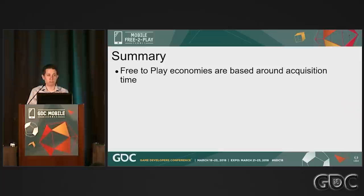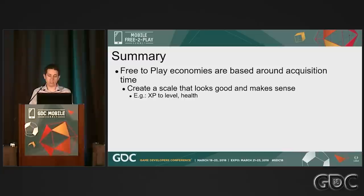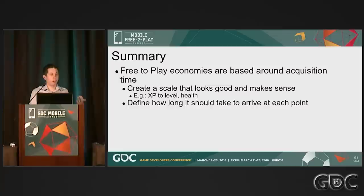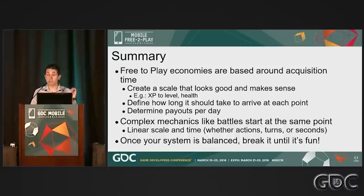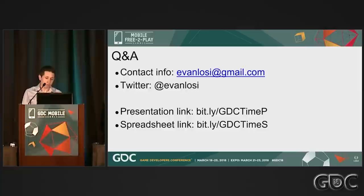In summary: free-to-play economies are based around time, especially the acquisition rate of content. Create a scale that looks good and makes sense. Define how long it should take to get to each point and get your payouts per day. You can handle battles and other system interactions similarly — you get an arbitrary starting point and look at the effective time of each item, whether it's actions per session, turns, or seconds of play. And most importantly, once everything is balanced, break it until it's actually fun. Equal balance is your starting point, not your destination. It's the little details and small advantages that make something really compelling.